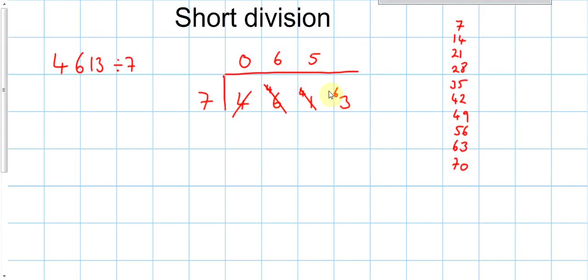And 7s into 63 go 9, because 9 7s are 63, remainder nothing. So we can stop there. So, that's the short division algorithm. The only way to get good at it is to practice it. Let's try a slightly harder one.